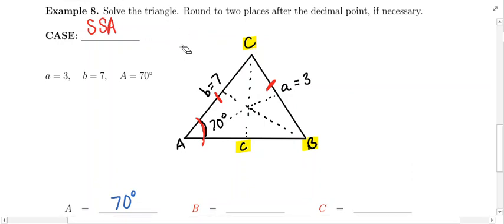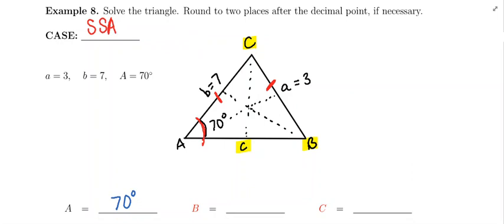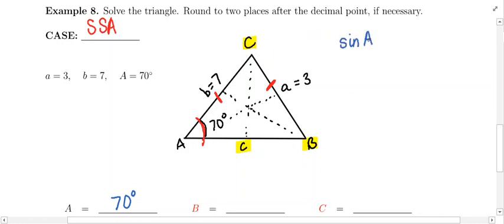For side-side angle, you need to use the law of sines. What are we going to use? Are we going to use the stuff about angles A and B, or B and C, or A and C? We're definitely going to use the angle A stuff because we know everything about A. We know angle A, we know side length a.